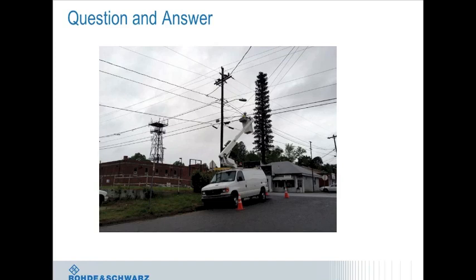Q&A: Asked to rank interference sources by commonality, Paul said BDAs and cable egress are tied for the top two spots — though cable egress is geography dependent, as some systems are better maintained and extend higher in frequency than others. After that, spurious emissions rank third, and fluorescent lighting and wireless microphones are roughly tied for last.